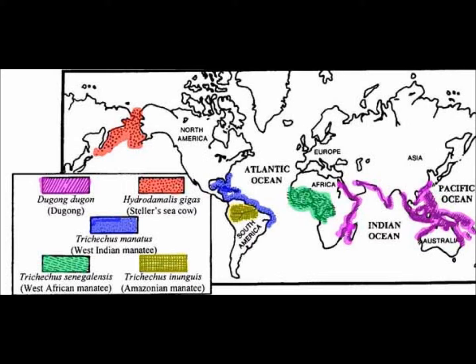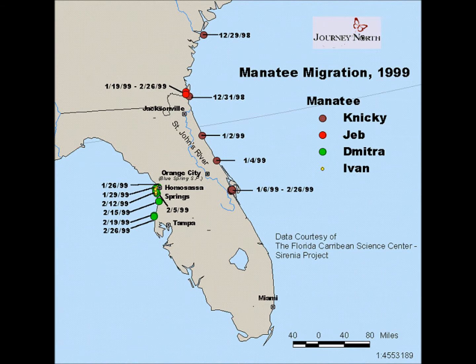Manatees live most of their life in the water. They are low-blooded and have a low metabolic rate, so they don't handle cold well. When water gets to 68 degrees, manatees start to migrate. In the summer, manatees spread out across the east coast of the U.S. towards the Gulf of Mexico, and in the winter they return to Florida.